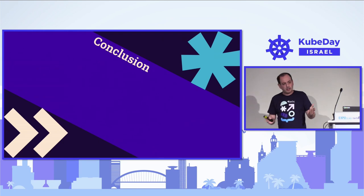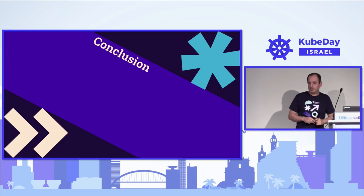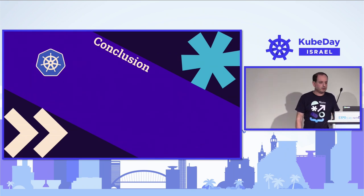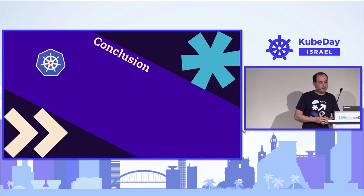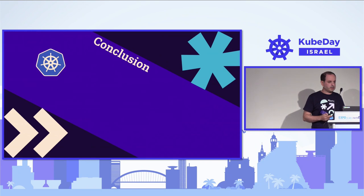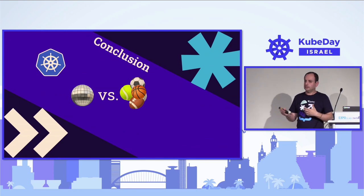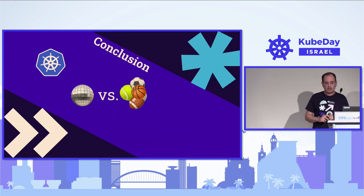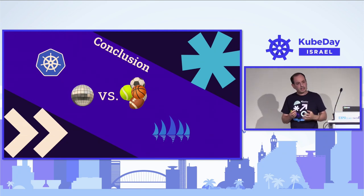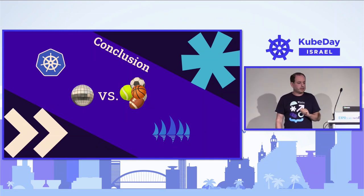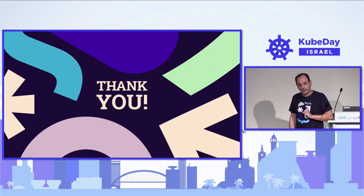Let us conclude what we discussed in the past 24 minutes. First, we talked about Kubernetes and how it eased our operational work. We mentioned that once we reach a certain scale, we need to rethink our operating strategy. We talked about vertical scaling versus horizontal scaling — the disco ball versus many balls — and the downsides of each approach. And last, we talked about Karmada, its architecture, and very initial use cases to get a glimpse of its multi-cluster API. Thank you very much.